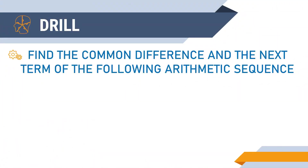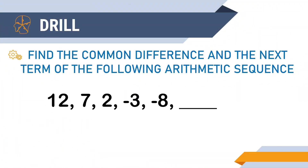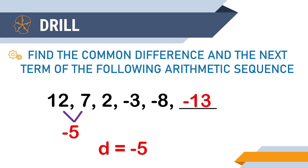Let's have another one: 12, 7, 2, negative 3, and negative 8. The common difference is negative 5. Since the terms are descending, the common difference is a negative number. You can get it by subtracting any consecutive terms — for this one, 7 minus 12 equals negative 5. And the next term is negative 13; you simply add negative 5 to negative 8.